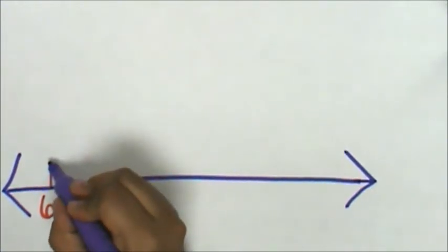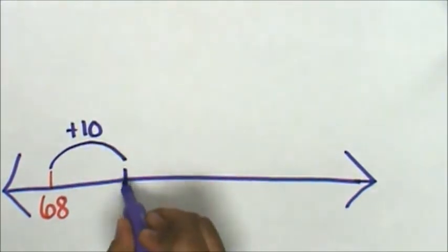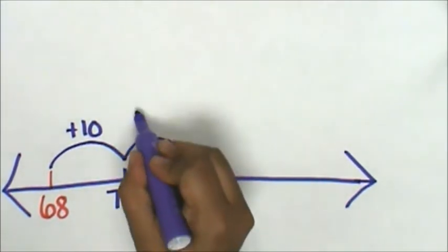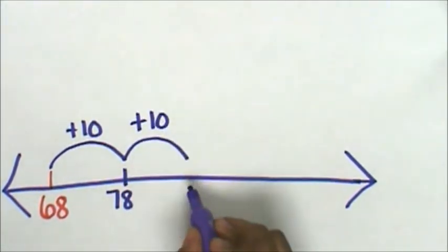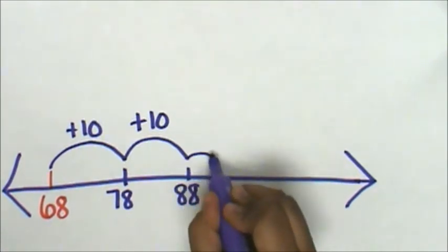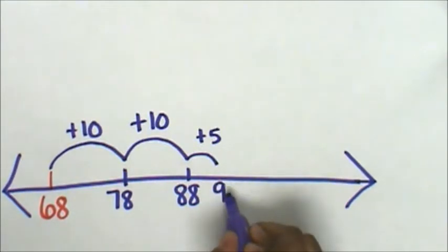I'm going to do a jump of 10. Now we're at 78. Another jump of 10. That's 20, now we're at 88 stickers. And a jump of 5, and now we're at 93.